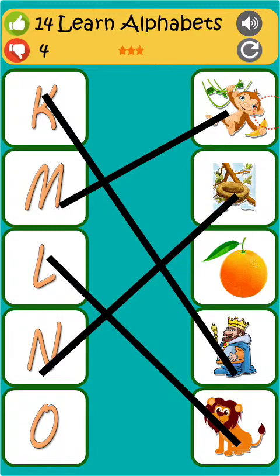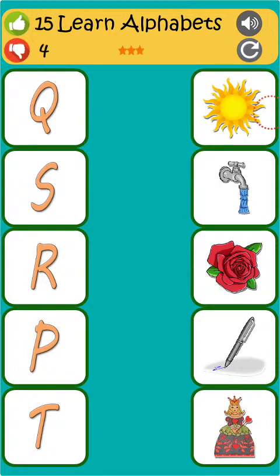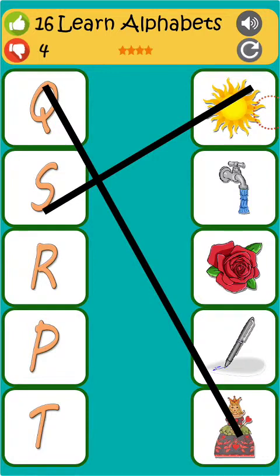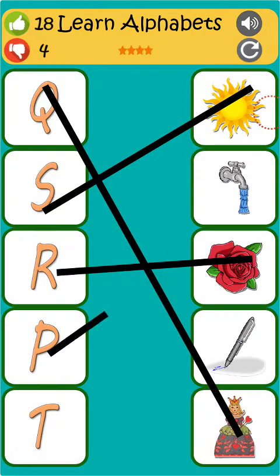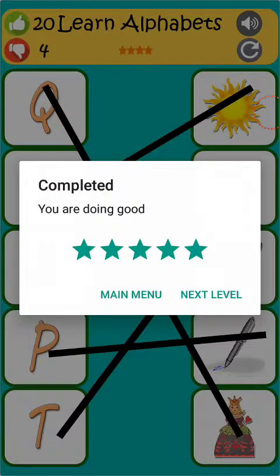N is for nest. O is for orange. Q is for queen. S is for sun. R is for rose. P is for pen. T is for tap.